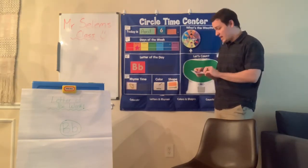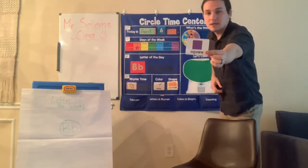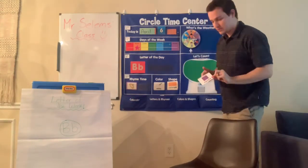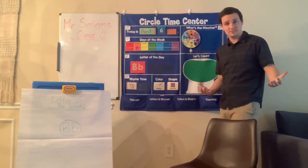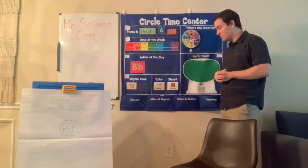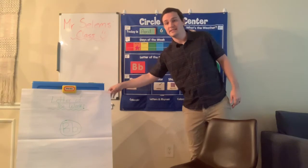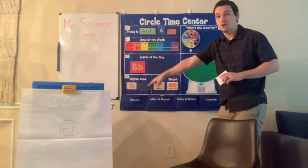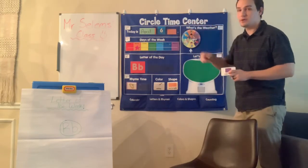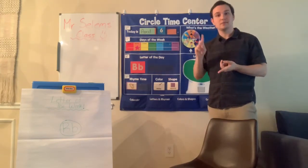So our shape of the day is a square. Now can you find something in your house that is a square? Awesome job. Alright, so for the color, my paper is white and for the square, my circle time board is one big blue square. So those are my color and my shapes of the day.